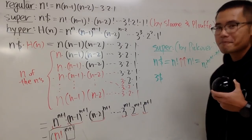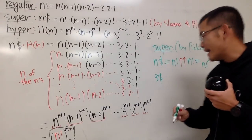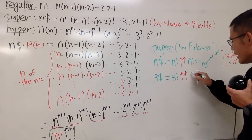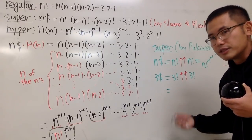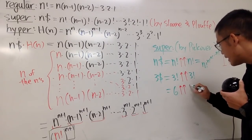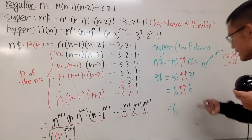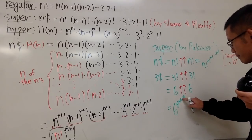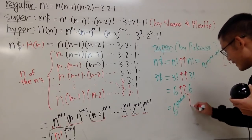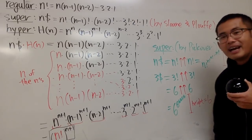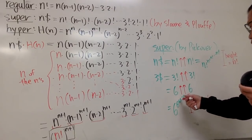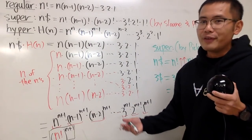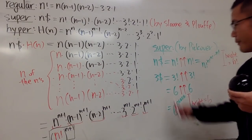Let's do a quick example: 3 dollar sign. That means 3 factorial double up arrow 3 factorial. Since 3 factorial is 6, this becomes 6 double up arrow 6, which means a power tower of 6 to the 6 to the 6 to the 6 to the 6 to the 6 — with height 6. I don't even know what 6 to the 6th power is, so don't ask me what 6 to the 6 to the 6 to the 6 to the 6 to the 6 is. This is just crazy. For people who like big numbers, you should definitely look up the super factorial, the hyperfactorial, and this Pickover version of the super factorial. The dollar sign matters!